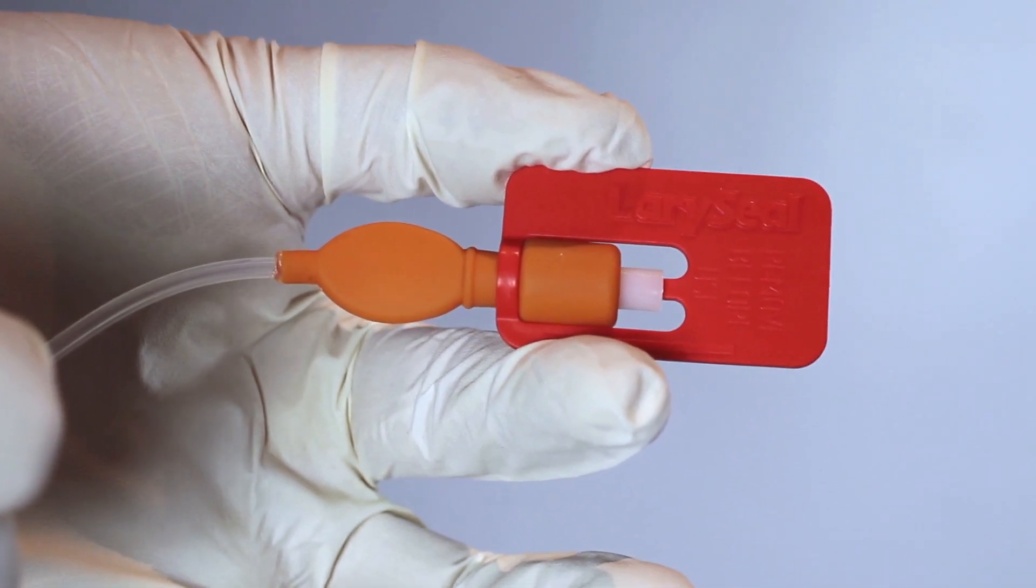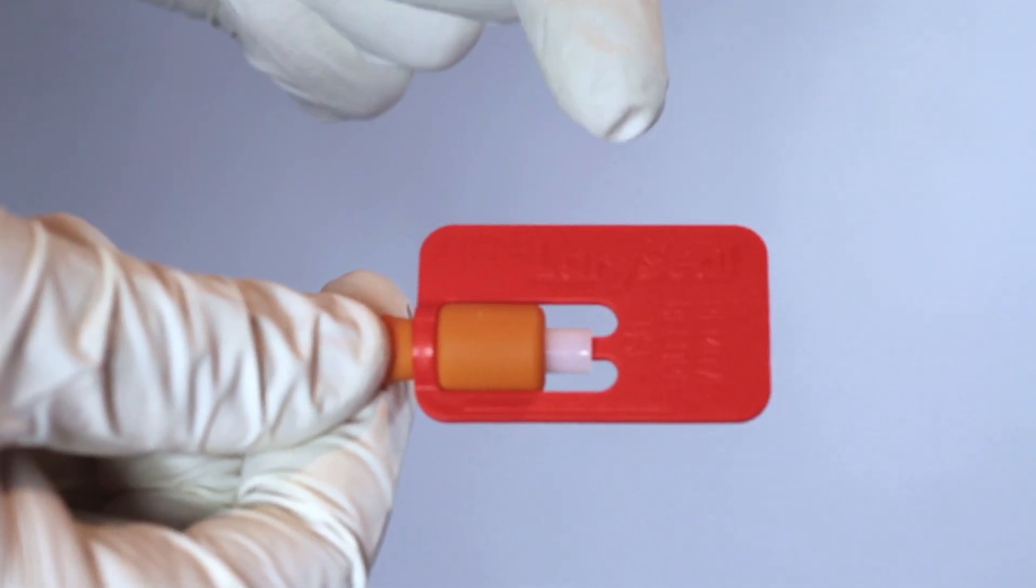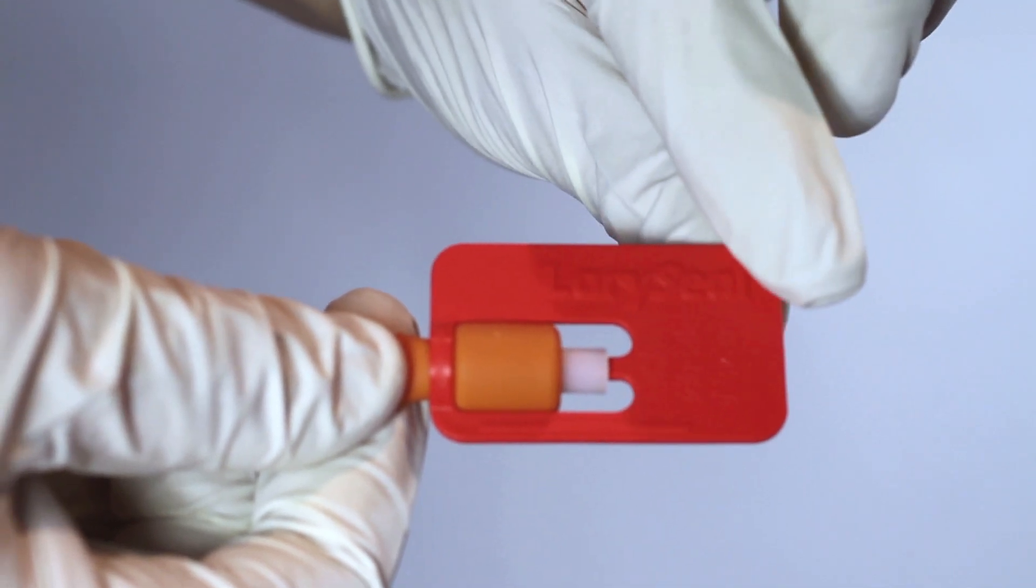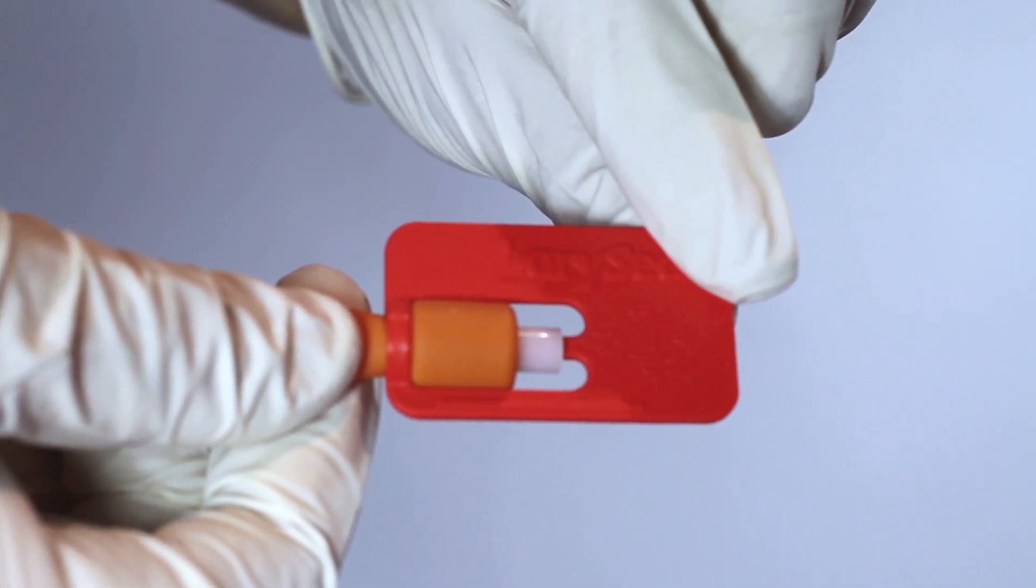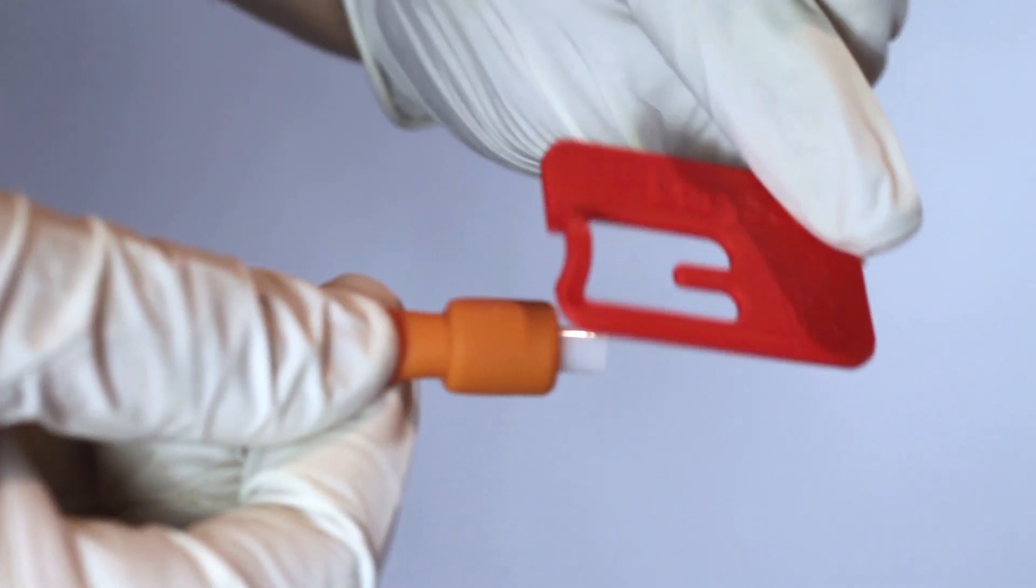Immediately before use you will need to remove the valve decompression tab by holding the balloon between your thumb and index finger before using a twist and pull action to remove the tab safely. The tab can now be discarded.